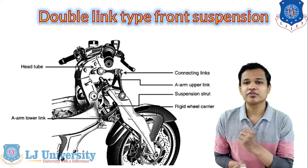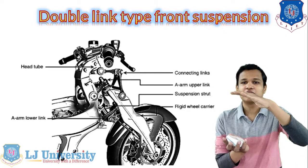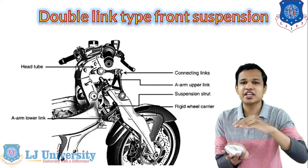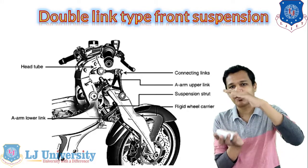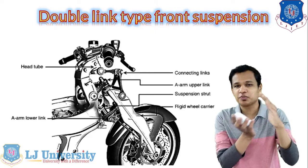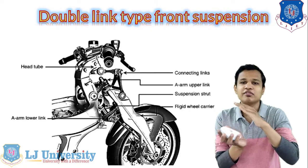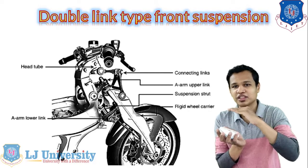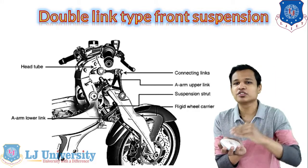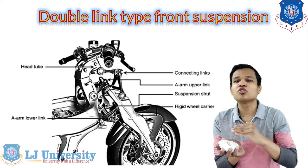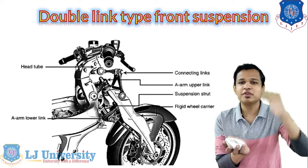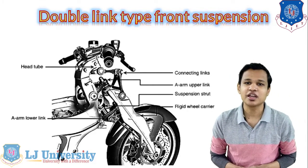Because of the two linkages, the movement of the suspension system is rigid and stiffened. The movement will be up and down; sideways movement will be stopped. Whenever the suspension goes up and down, the linkages will move with it, and the suspension ability will be absorbed through this controlled movement.